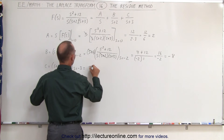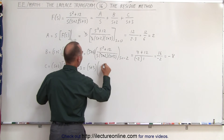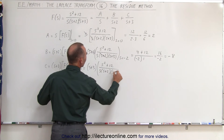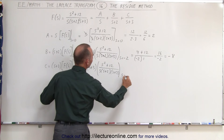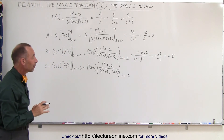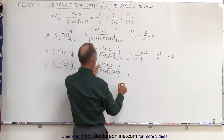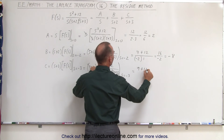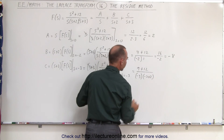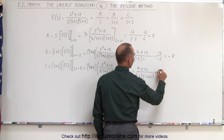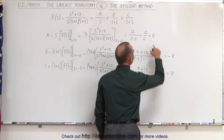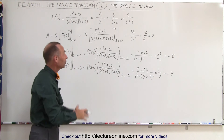And finally for C: C is equal to (s plus 3) times (s squared plus 12) divided by s times s plus 2 times s plus 3, evaluated when s is equal to minus 3. The (s plus 3) terms cancel out, and now we replace every s by minus 3, which gives minus 3 squared — which is 9 — plus 12, divided by minus 3 times (minus 3 plus 2). Simplifying, this gives us 21 divided by minus 3 times minus 1, which is plus 3, giving us equal to plus 7. These are the same three values we got in the previous example.